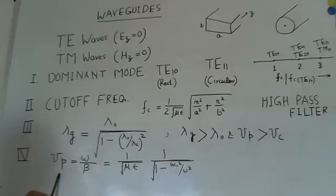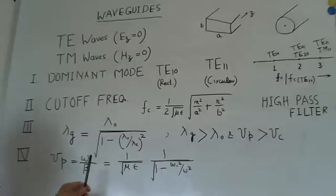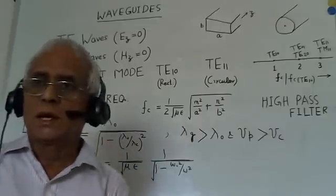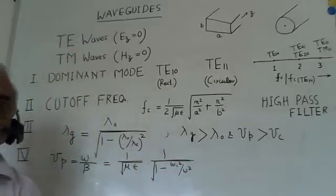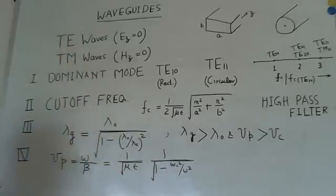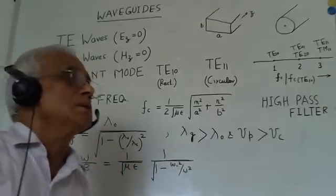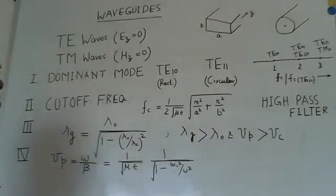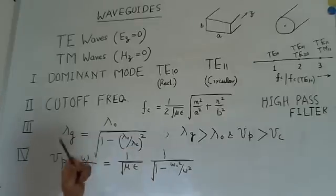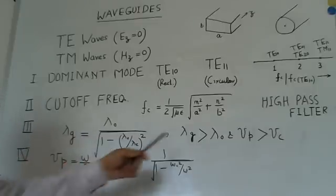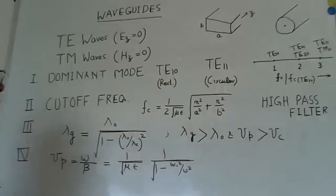So, this is the value of vp, and again I am restressing the point here, that the phase velocity of the wave inside the waveguide is more than the speed with which the energy is propagating in the waveguide, or the free space velocity. So, it is greater than vg as well as vc, the free space velocity of the waveguide.